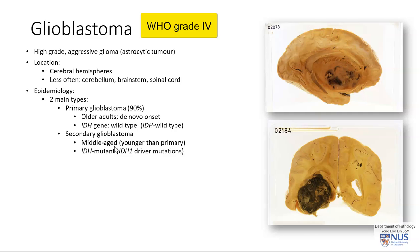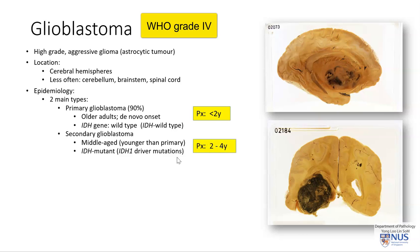Secondary glioblastomas occur in slightly younger patients compared to primary tumors. They are much less frequent, and in these tumors the IDH gene is abnormal — it is mutated. So these are known as IDH mutant tumors. They often occur in the setting of a previous lower-grade glial tumor which progresses to a higher grade. The prognosis of primary glioblastomas is quite dismal, ranging from a few months to usually less than two years. The prognosis for secondary glioblastomas is slightly better, but still quite poor.